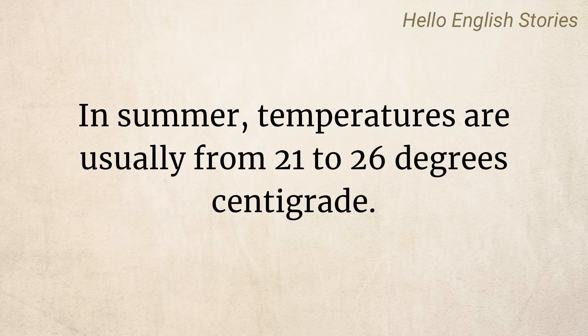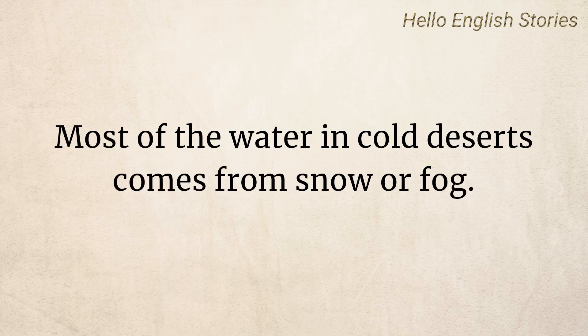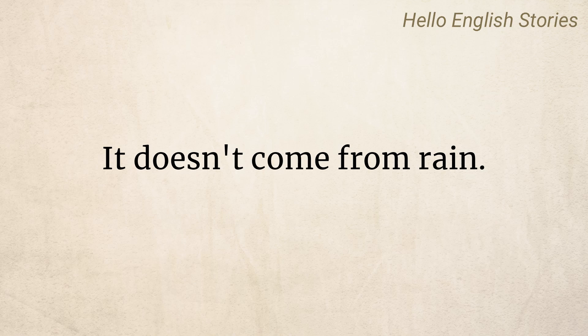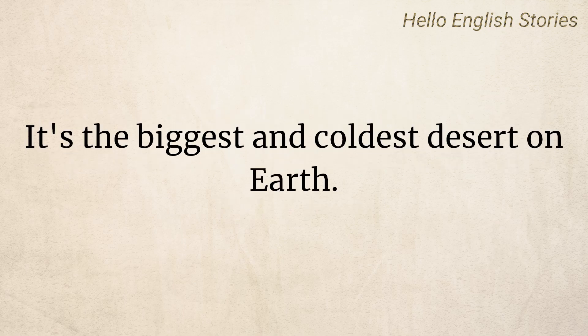In summer, temperatures are usually from 21 to 26 degrees centigrade. In winter, they are usually from 2 to 4 degrees. Most of the water in cold deserts comes from snow or fog. It doesn't come from rain. It snows in Antarctica, but this only makes about 5 cm of water every year. It's the biggest and coldest desert on Earth.